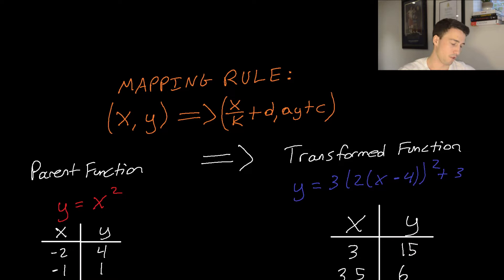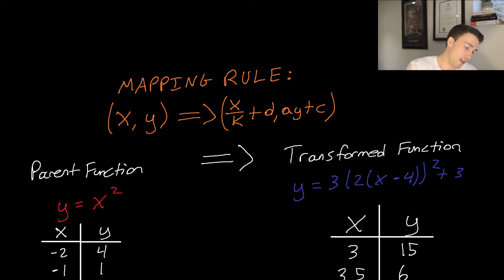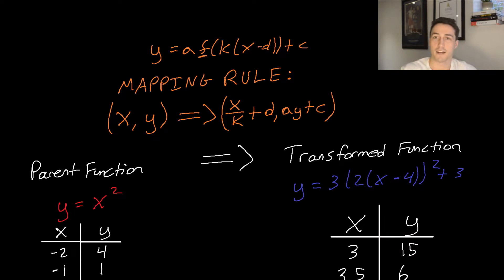Now I want to review the mapping rule. The mapping rule says that a point (x, y) can be transformed to (x/k + d, ay + c). This is basically just breaking down the transformed function. We want the form y = a·f(kx − d) + c, and f can be replaced with whatever function we're dealing with — sine, quadratic, trigonometric — and now we're going to apply it to the log function.